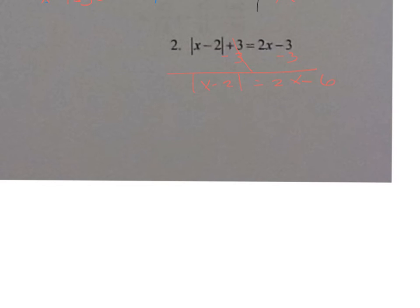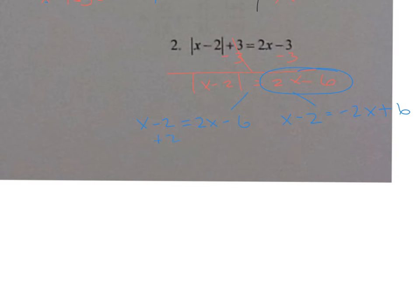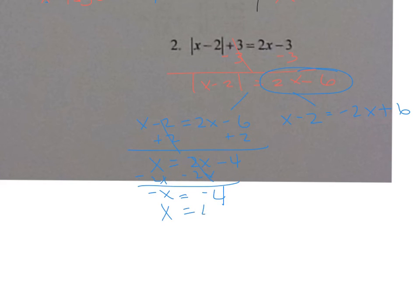Now we branch it off into two equations. The first is x minus two equals two x minus six. Solving: add two to both sides to get x equals two x minus four, then subtract two x to get negative x equals negative four, so x equals four.